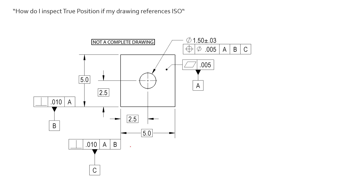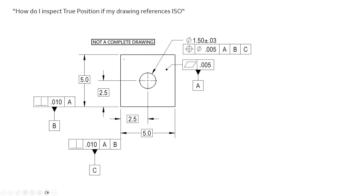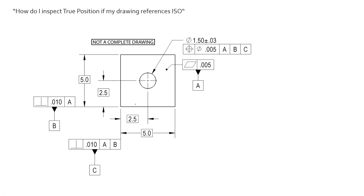Here we have an example drawing of a very simple part — just a square block with a round hole in it. We have three sides being identified as datum features: datum feature A being identified as this top surface here, datum feature B being identified as this bottom surface here, and datum feature C being identified as this left surface here. So we're controlling the position of this hole.